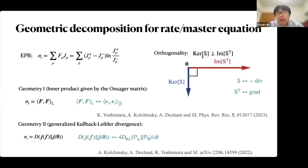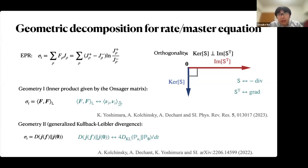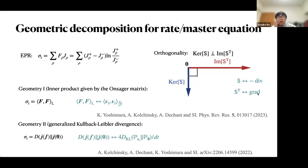We now consider the entropy production rate in chemical thermodynamics, and consider the orthogonality of the two spaces: the kernel of S and the image of S-transpose. Here, S corresponds to minus divergence and S-transpose corresponds to the gradient. We consider two generalizations of the geometric decomposition for the rate equations: first, the geometry of the inner product; and next, the geometry of the Kullback-Leibler divergence.